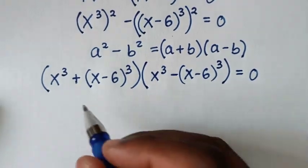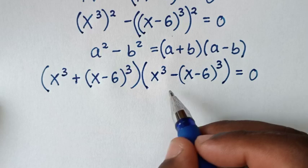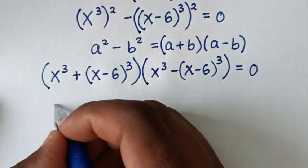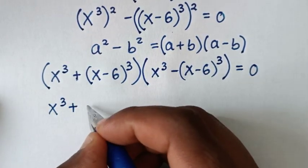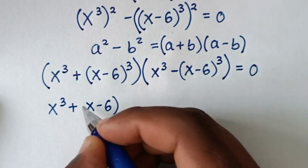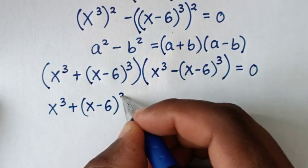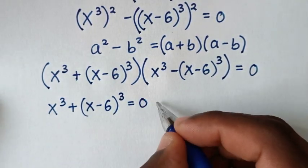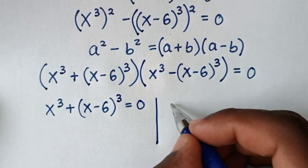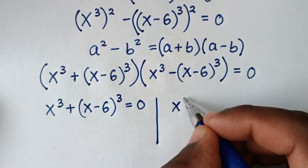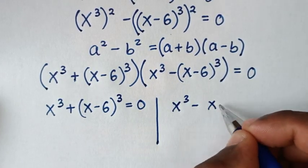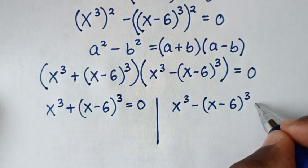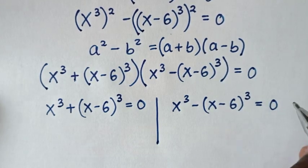From here we'll have two solutions: the first solution is x power 3 plus x minus 6 bracket power 3 is equal to 0, and the second solution is x power 3 minus x minus 6 bracket power 3 is equal to 0.